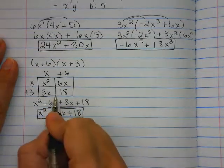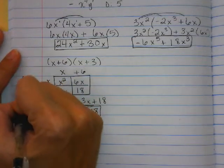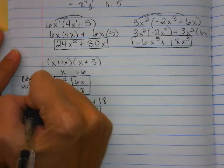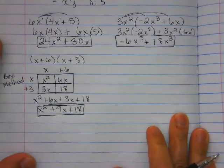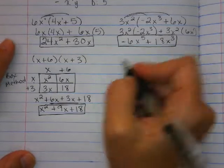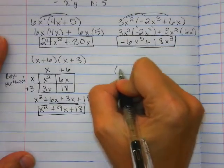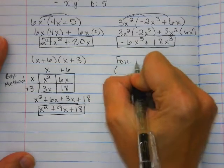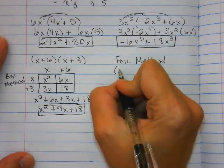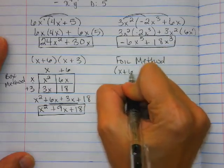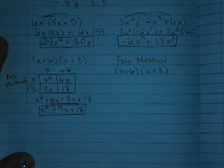This is called the box method. That is not a requirement — I simply want to show you some different ways to do this. We can also use what is called the FOIL method. So I'm going to use this same example. The FOIL method is an expanded distributive property method where you can go through.